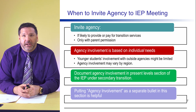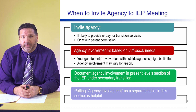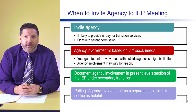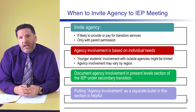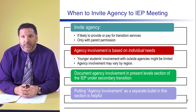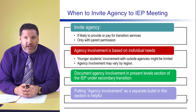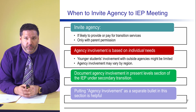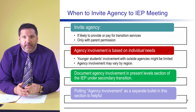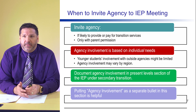An agency is invited if they are likely to provide or pay for transition services, but only if the parent provides permission. It is up to the school entity — whether a school district or charter school — to inform the parent of the importance of engaging with an agency and what services and supports they can provide. Agency involvement is also based upon individual needs; you're not necessarily inviting every agency to an IEP meeting for all students ages 14 to 21. It depends on the student's disability and post-school outcomes regarding further training, employment, or living independently.